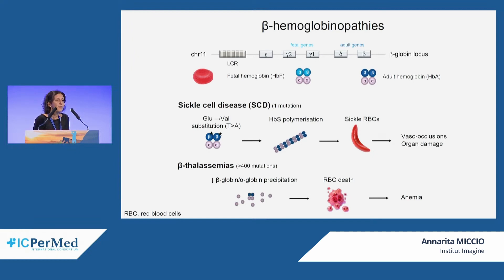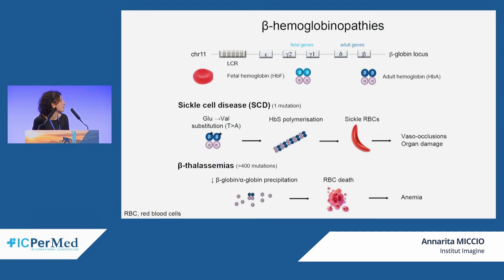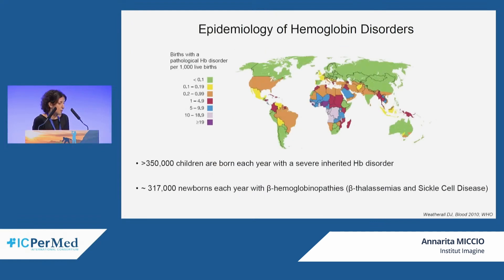In beta-thalassemia, more than 400 mutations have been described that reduce or completely abolish beta-globin synthesis. This leads to precipitation of uncoupled alpha-globin, which in turn causes ineffective erythropoiesis, apoptosis of red blood cell precursors, and also of mature red blood cells. The main clinical aspect of this disease is anemia.